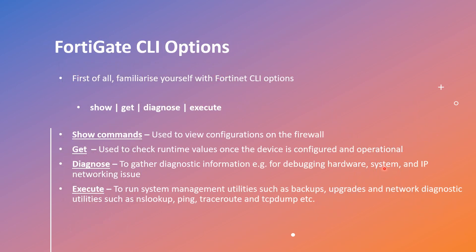To start off with, let's understand Fortinet CLI options first. On a FortiGate firewall, we have four different types of commands. The first one are show commands. They are used to view configurations on the firewall — for example, if you have to view a running config on an interface or if you want to view the full configuration of the device, you use show commands.